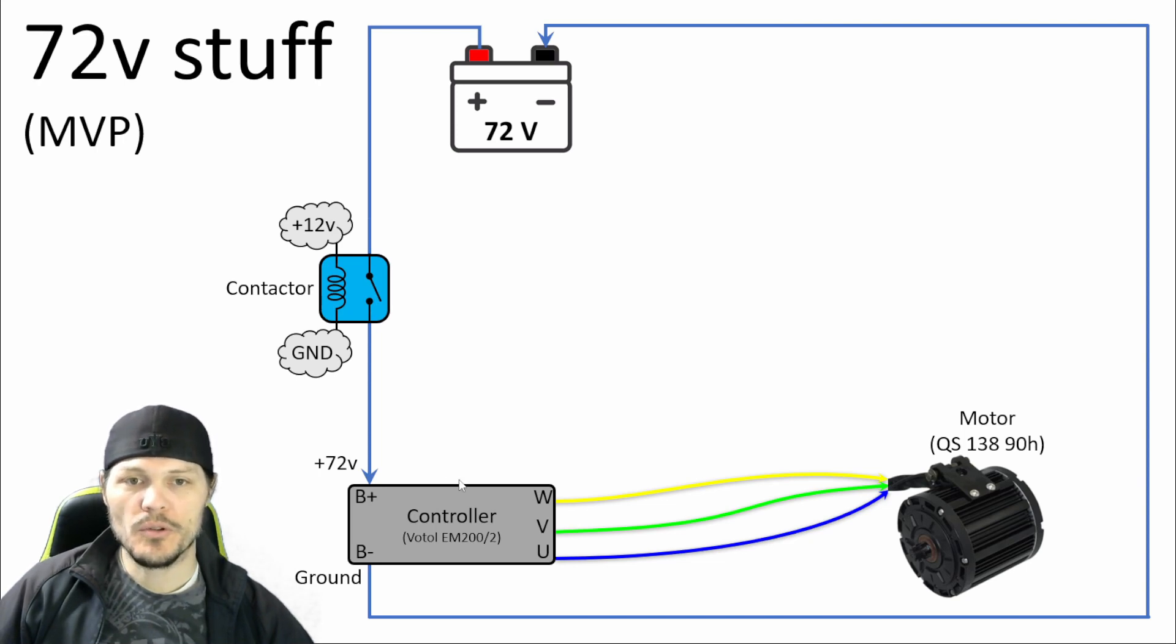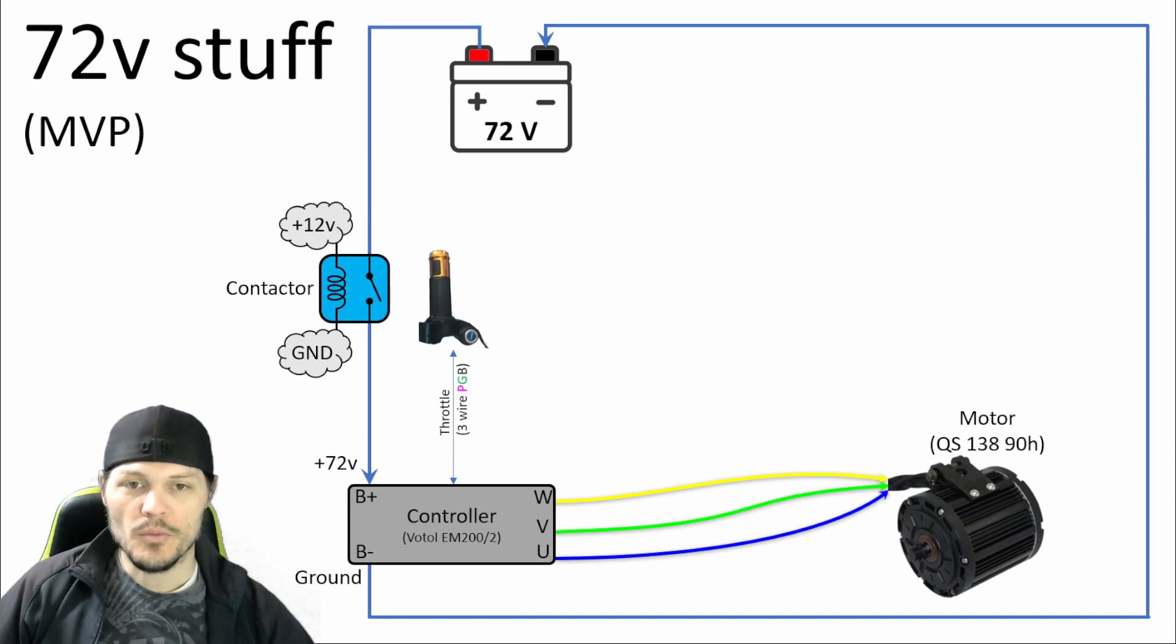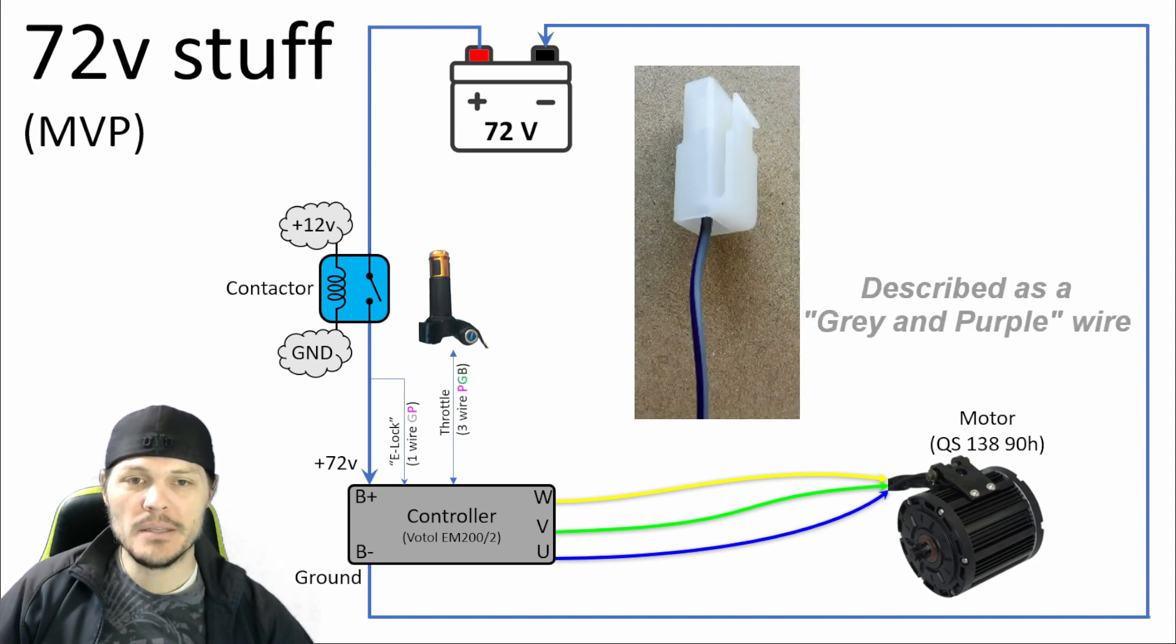Another thing that the controller needs is the input for the throttle. On the wire harness for the Votol EM200-2, the throttle connector is a three wire cable that's pink, green, and black. That should just be a classic connector that plugs right in. Pretty straightforward. So remember a second ago we talked about the separate wire that powers the controller. That's a different, thinner wire with 72 volts in it, and it's labeled in the Votol documentation as the e-lock. Basically this is what turns the controller on.